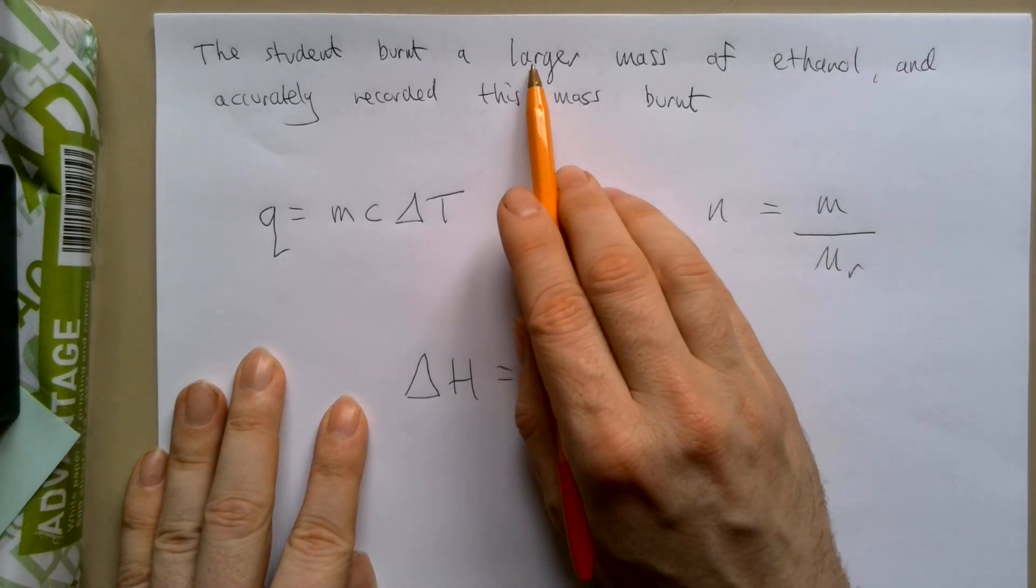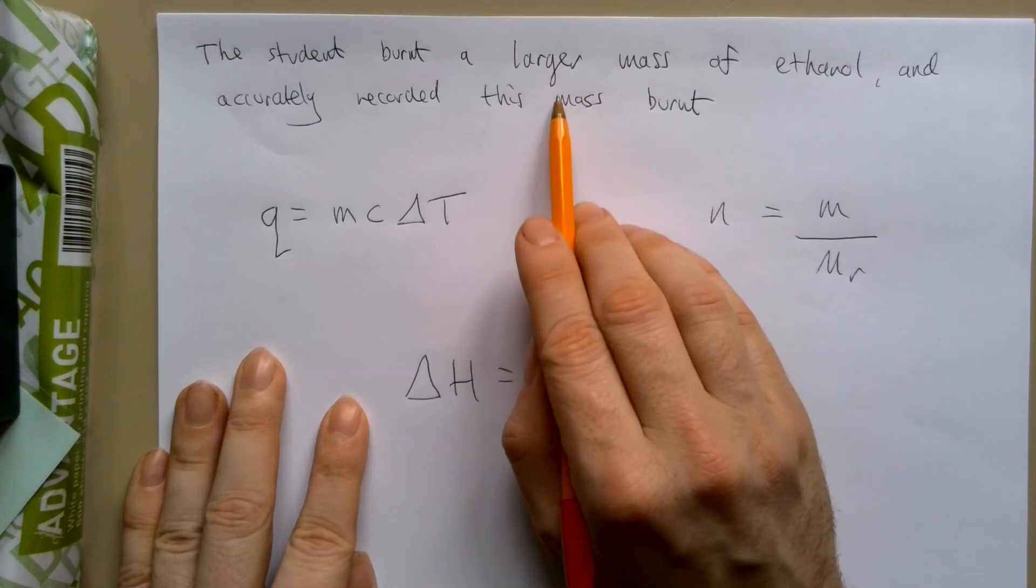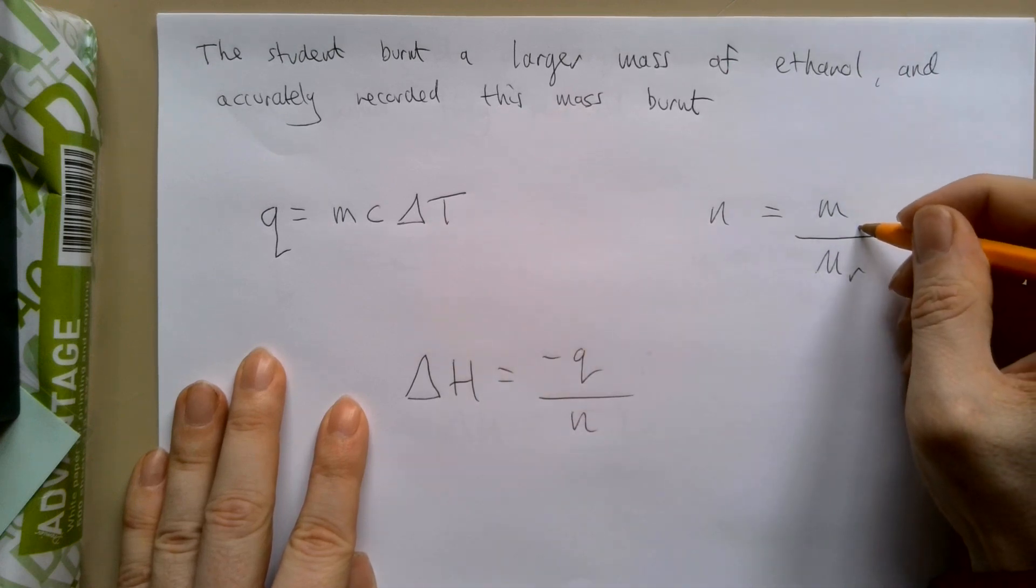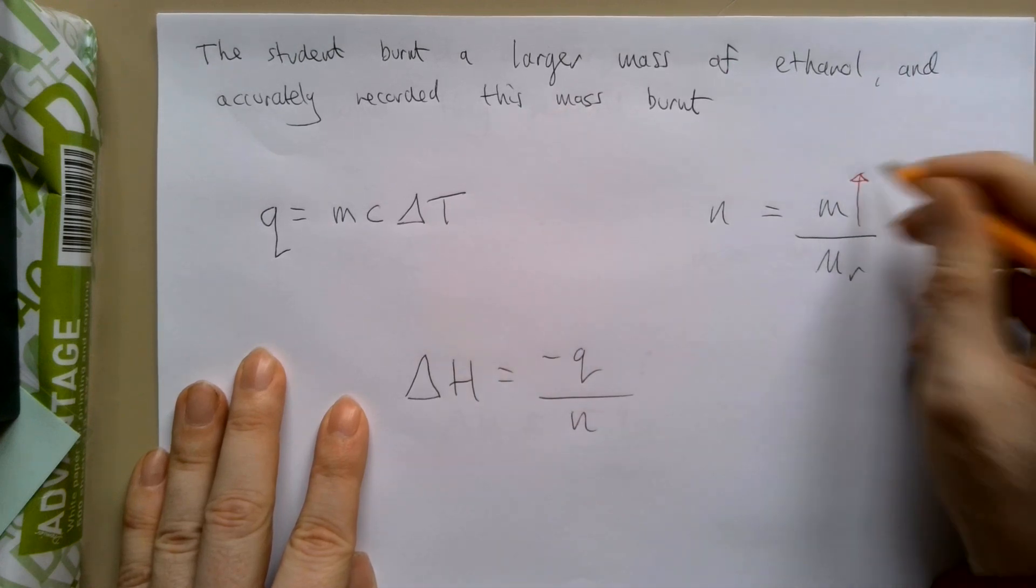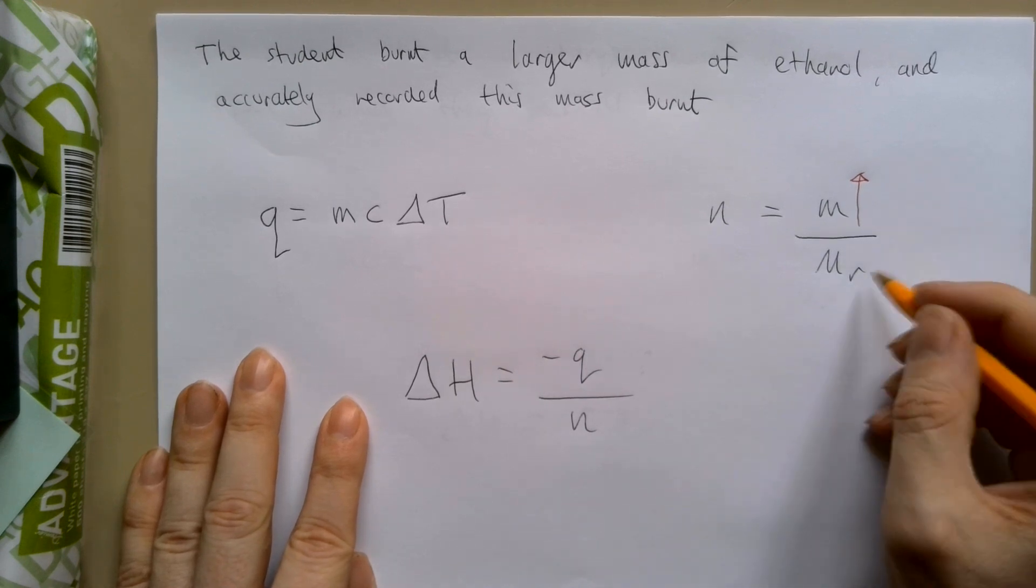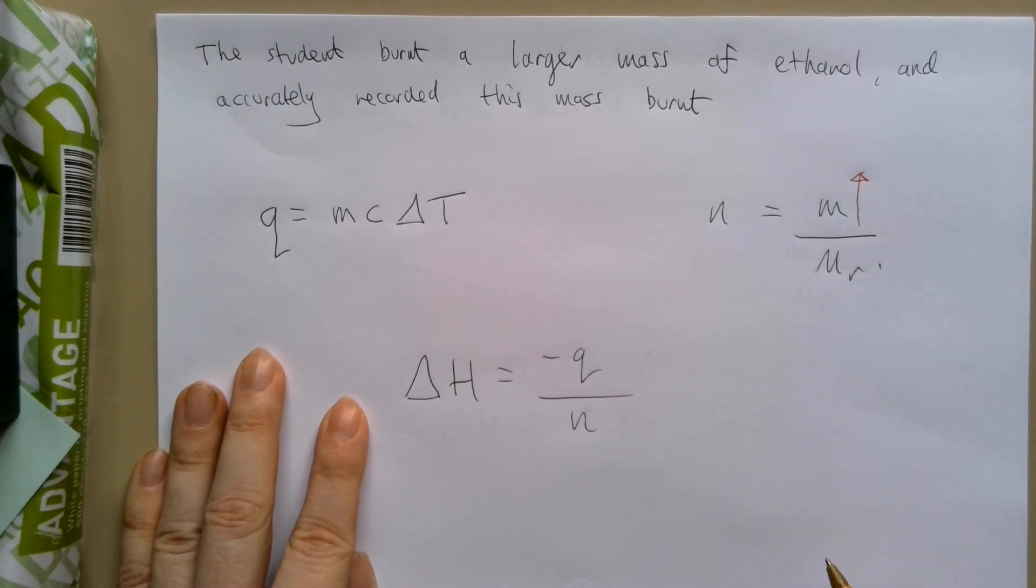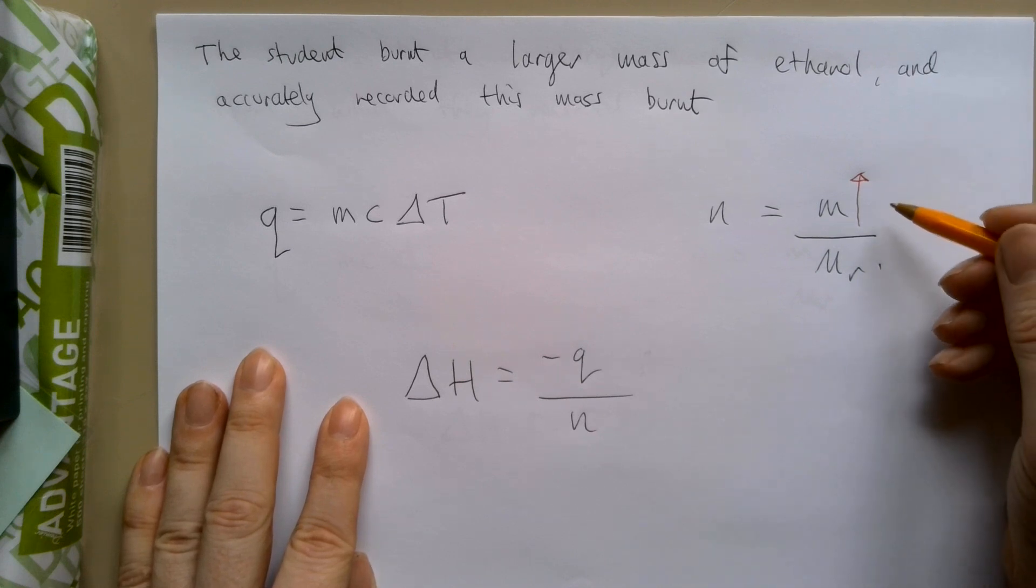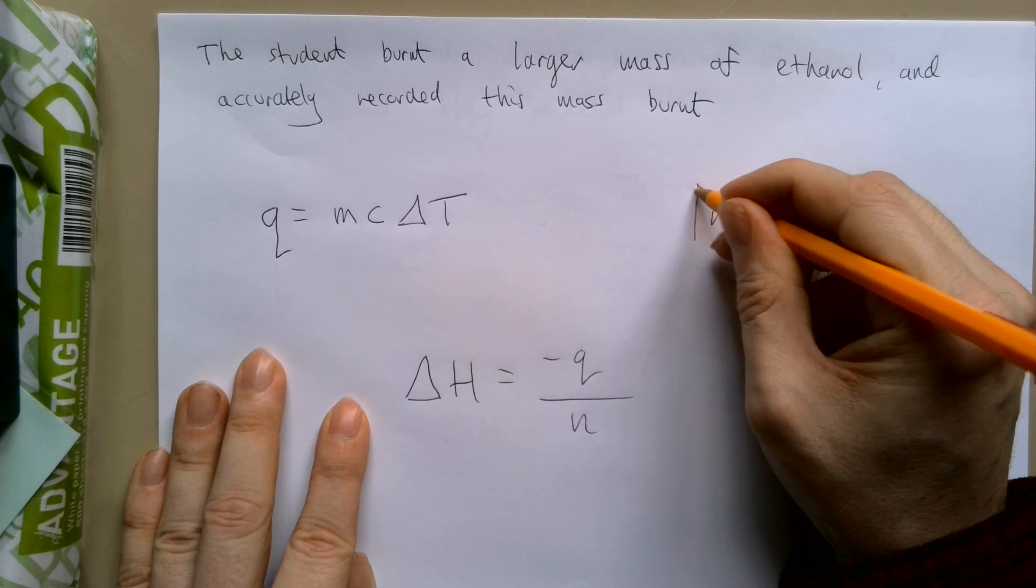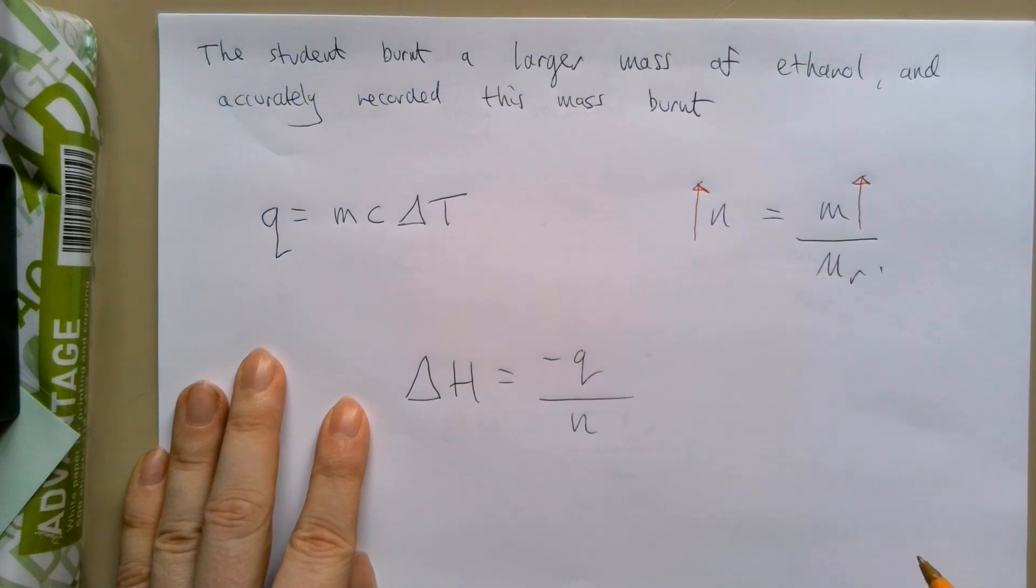We said we've burnt a larger mass of ethanol and that has accurately been recorded. So our mass of ethanol that we've recorded has increased. The Mr stays the same. Now in maths, if you increase the top of a fraction, you increase the final answer. So by burning a larger mass of ethanol, we have burnt more moles of ethanol.